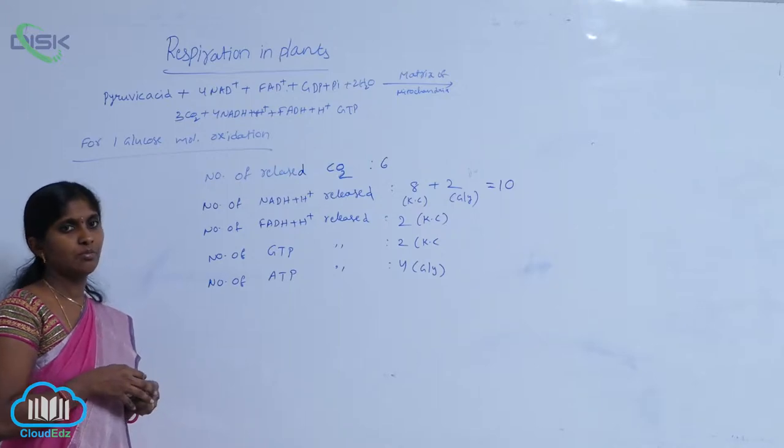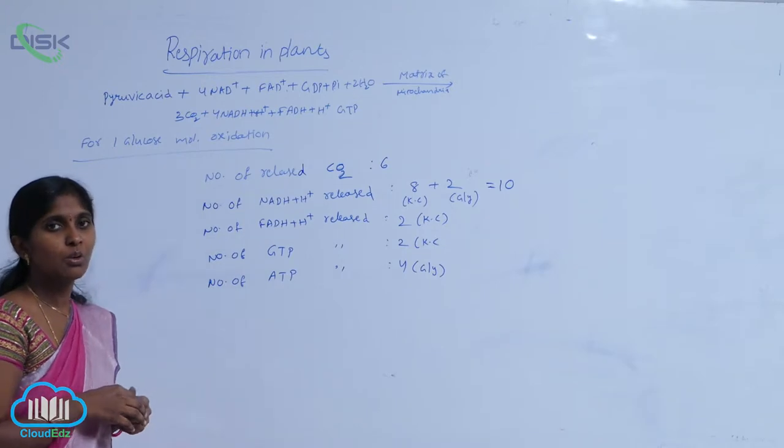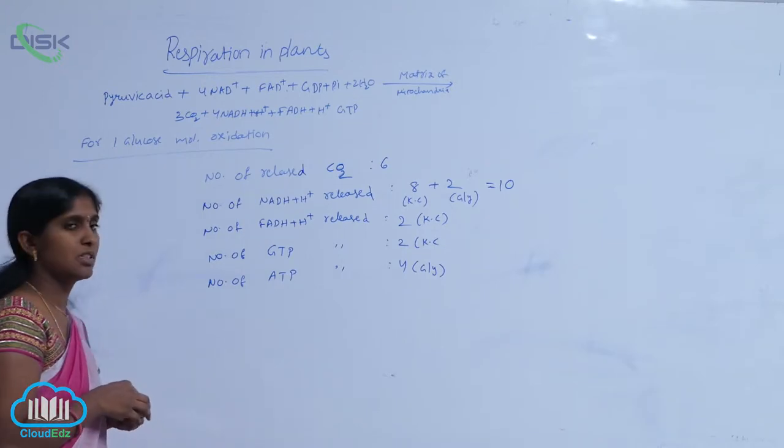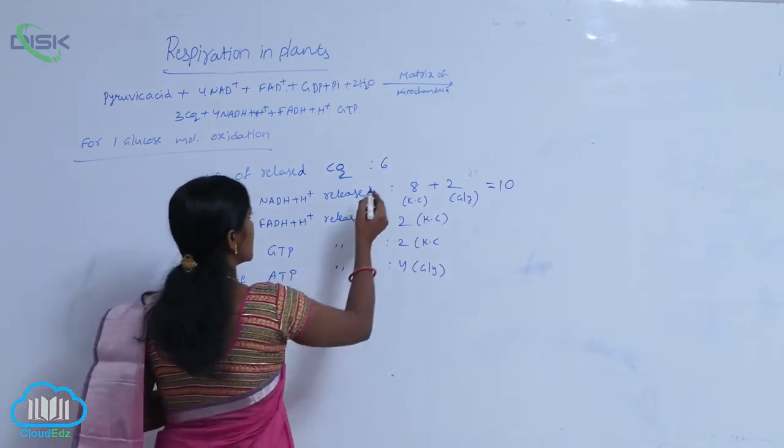One glucose oxidation. If one molecule of glucose is oxidized, the number of released carbon dioxide are 6.